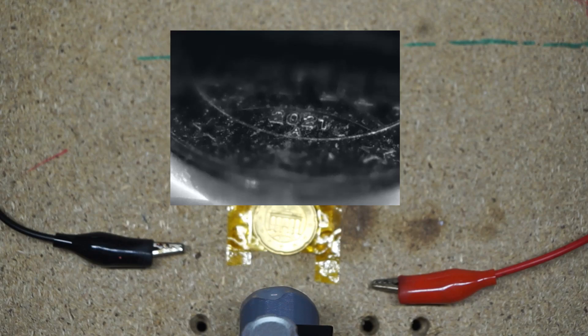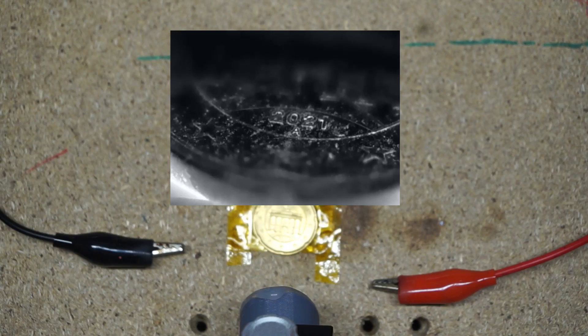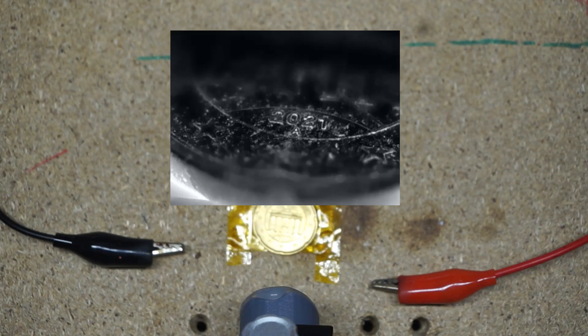We can see in the lower edges it's getting hotter and if you take a look at the date on the coin we're starting to get way better contrast on the numbers there.